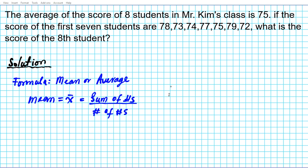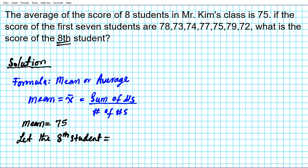Now we're going to apply this formula to the scenario we're dealing with. We know the mean or average is 75. We need to find the score of the 8th student — we don't know what that is, so let's declare it. Let the 8th student's score be X.